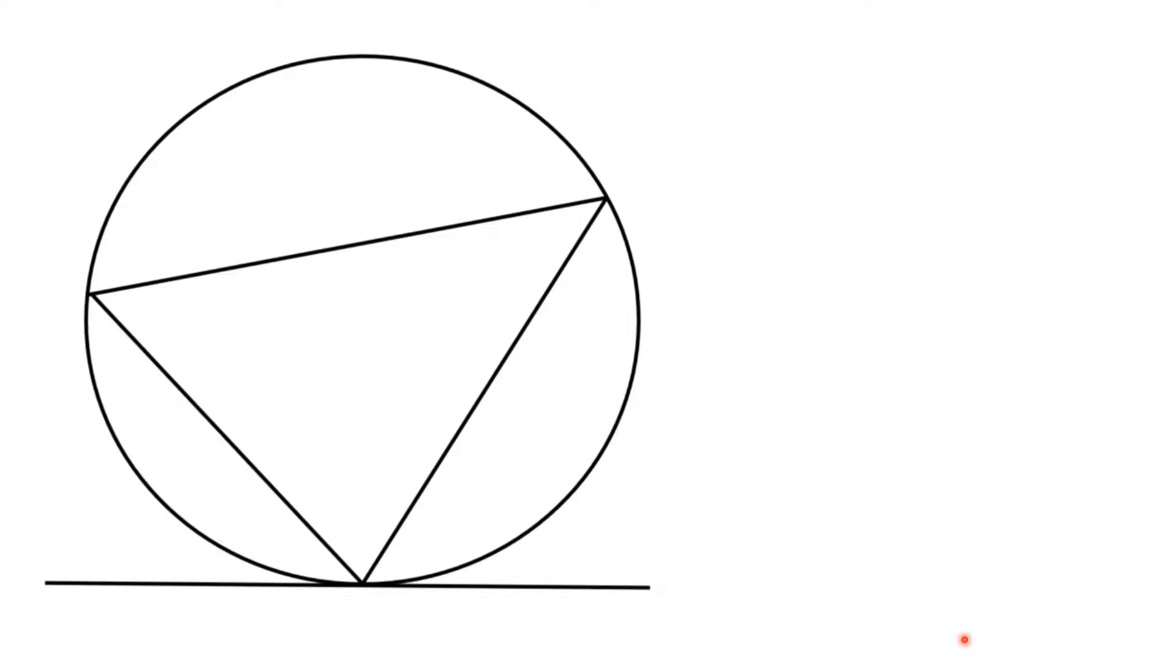So we need to prove this. I'm going to prove it in much the same way, the same starting point that we've used for all of these theorems. We're going to add in some radii. And I'm going to give an angle a name. I'm going to call this one A.